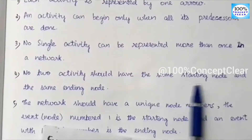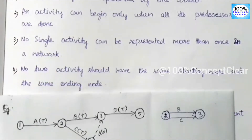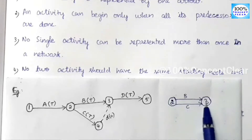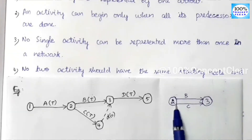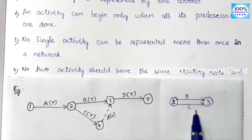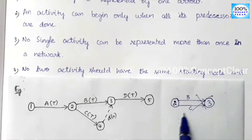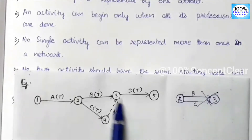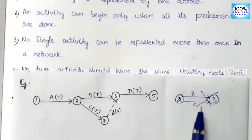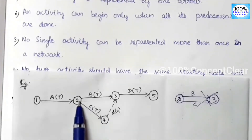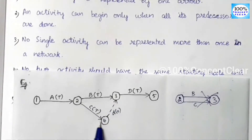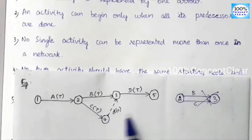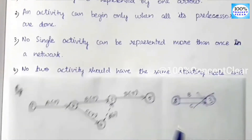The fourth rule: no two activities should have the same starting node and the same ending node. For example, if B activity starts at node 2 and ends at node 3, and C activity also starts at node 2 and ends at node 3, that is wrong. If you want C activity to complete at node 3, you must use a dummy activity.